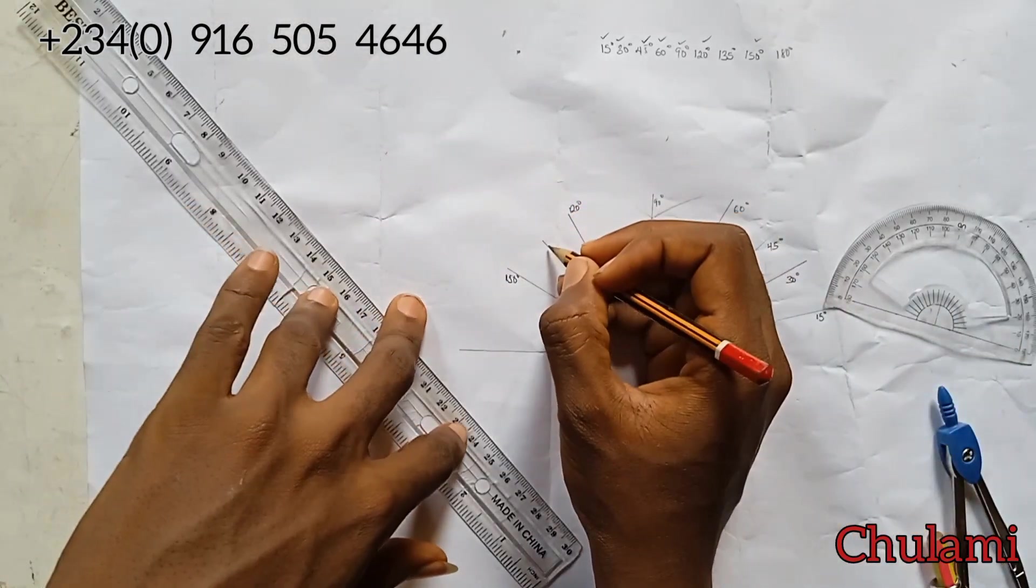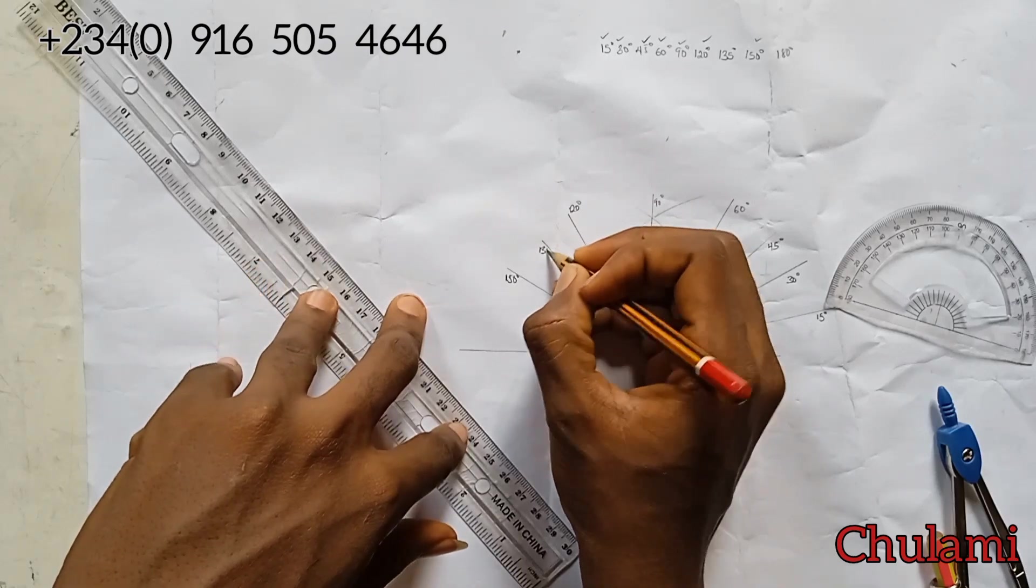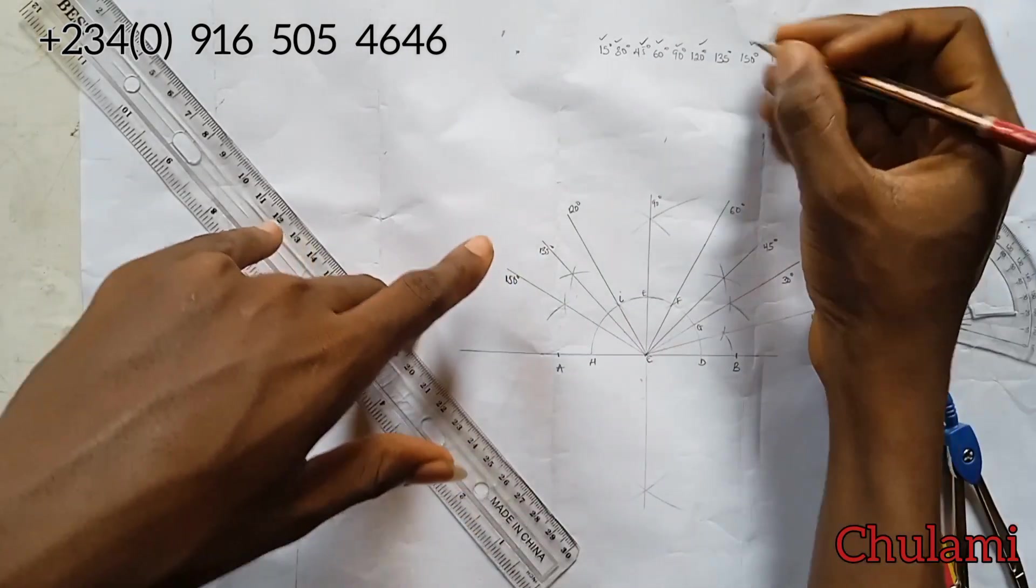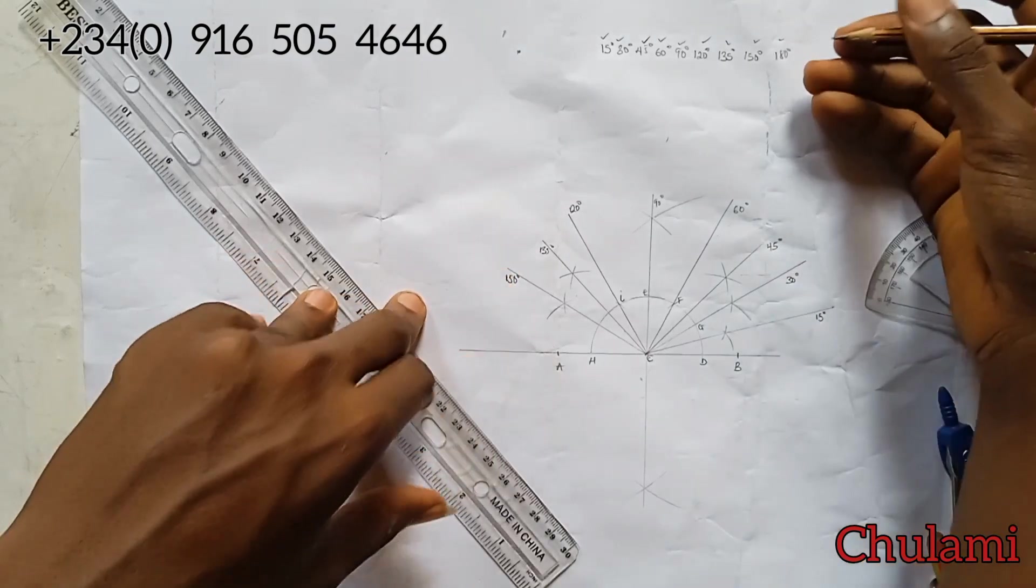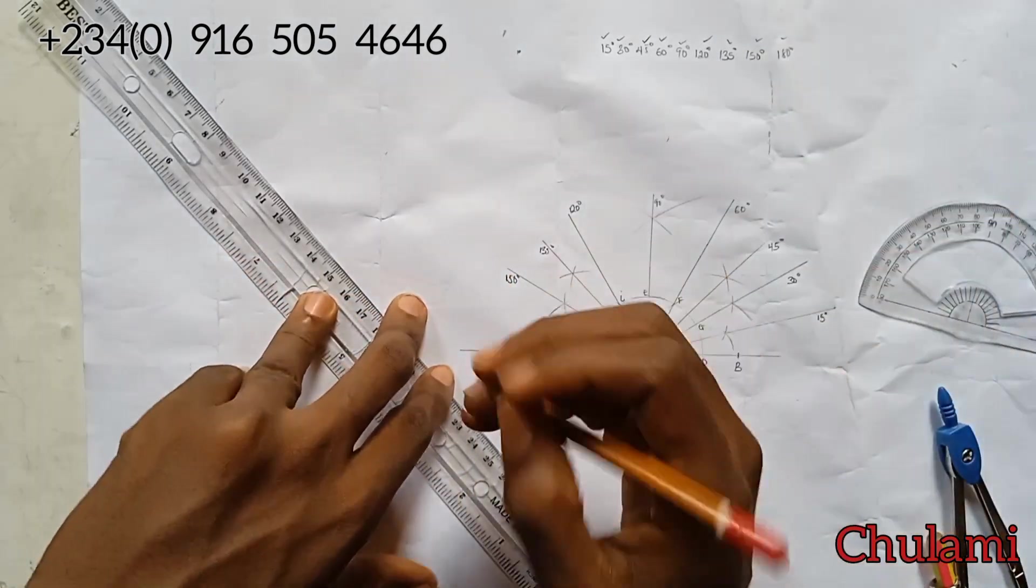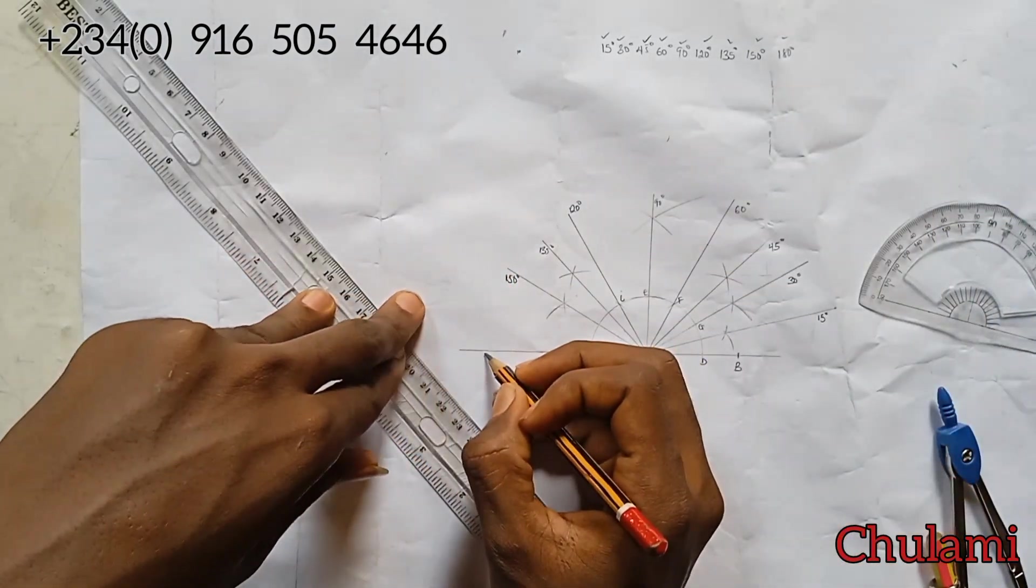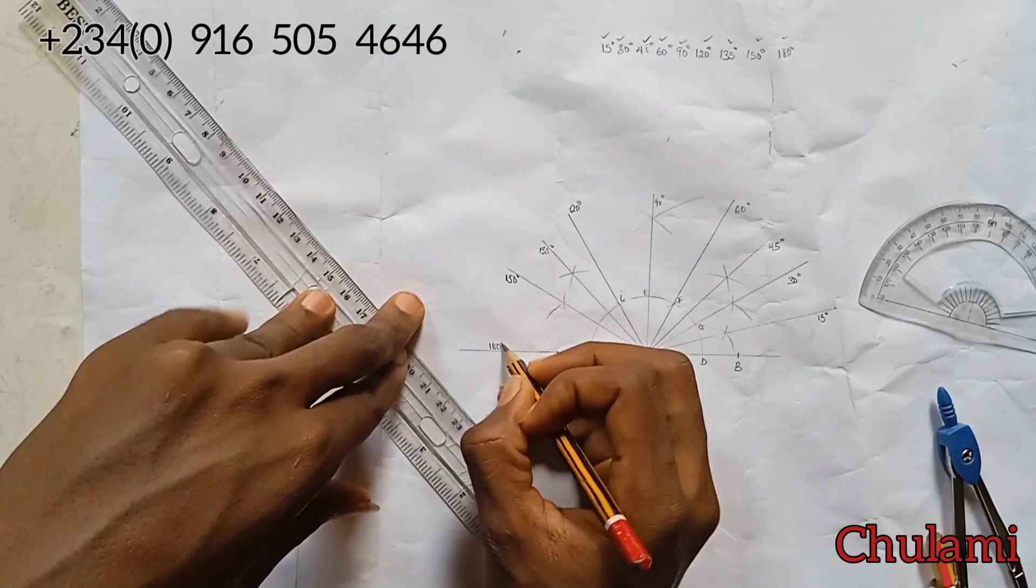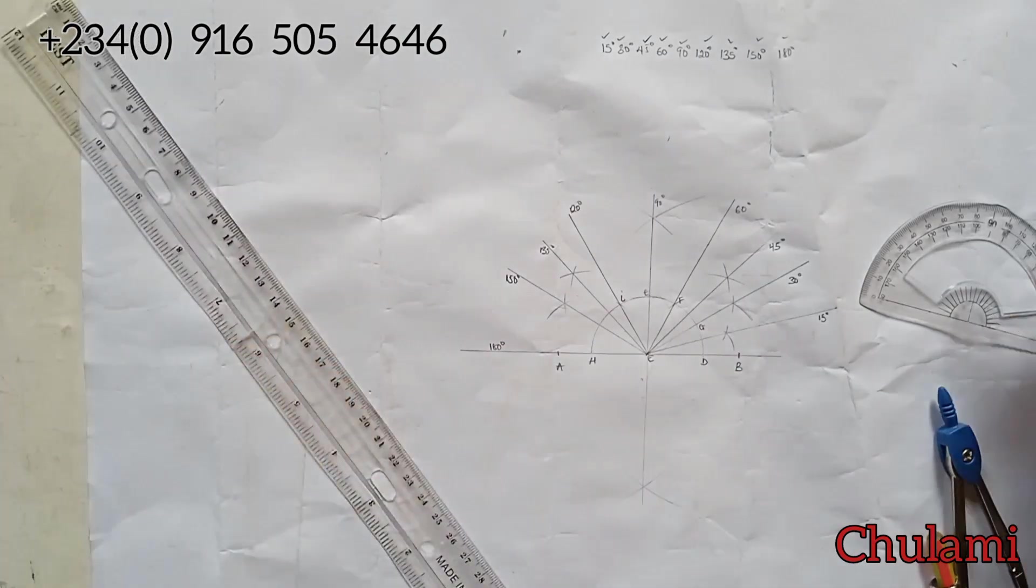Then it's mainly 180. Remember, angle on a straight line is equal to 180. So automatically this is 180 degrees. So this is how to construct different angles to one straight line.